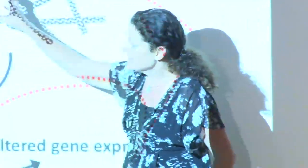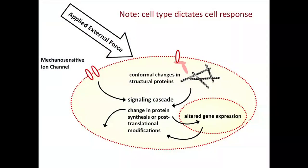As mechanical engineers, we're particularly interested in things that involve the mechanical signaling cascade. At least to date, the way induced pluripotent stem cells are made is completely biochemical — giving them a signal to a biochemical receptor. We're interested in their mechanical receptors.